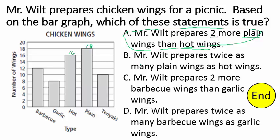Just to confirm that B, C, and D are wrong — Mr. Wilt prepares twice as many plain wings as hot wings. Well, if that was the case, it'd have to be 18 versus 9, and that's not true. Mr. Wilt prepares two more barbecue wings than garlic: barbecue is 12 versus garlic 8, that's four more, so statement C is false. Mr. Wilt prepares twice as many barbecue wings as garlic wings — this would have to be six down here, which it's not. You're just reading the number it stops on, and that's how you solve that problem.